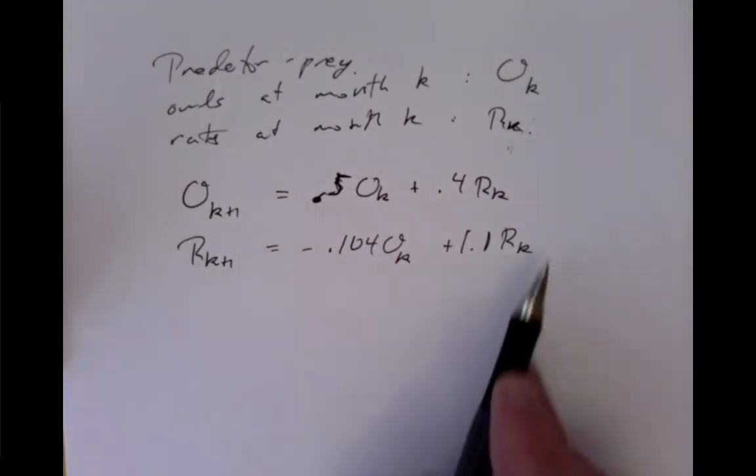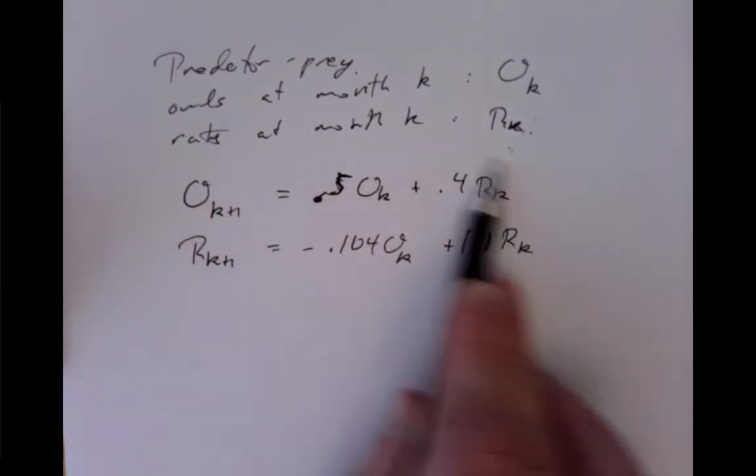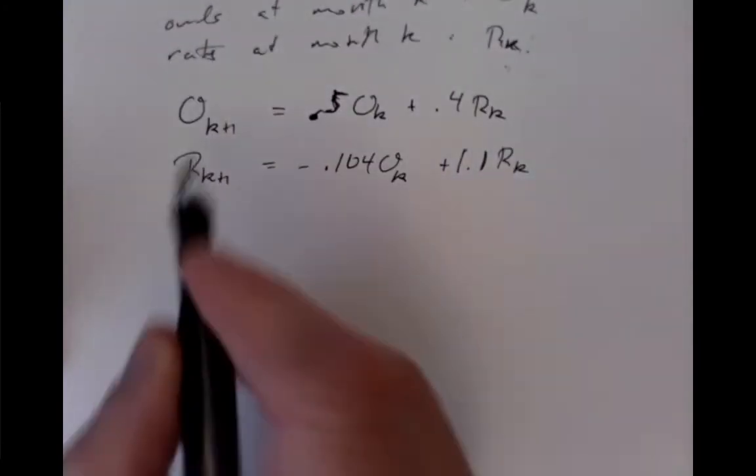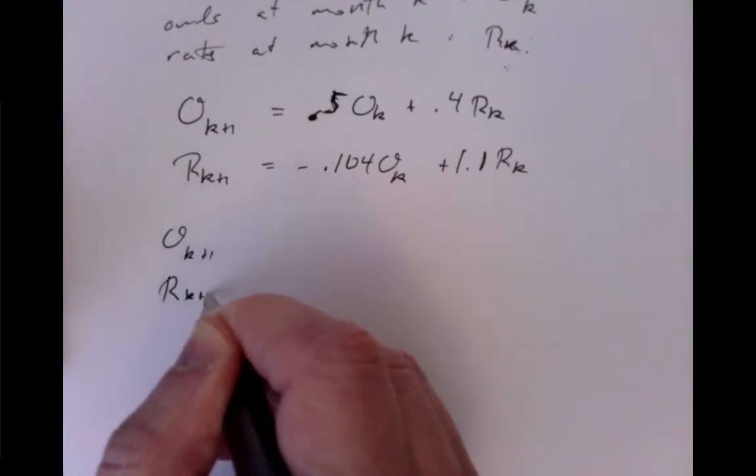Now this means we can organize this as a matrix. Next month's data, in terms of last month's data, has a linear transformation of last month's data. We could put this into a vector. O_{k+1}, R_{k+1}.